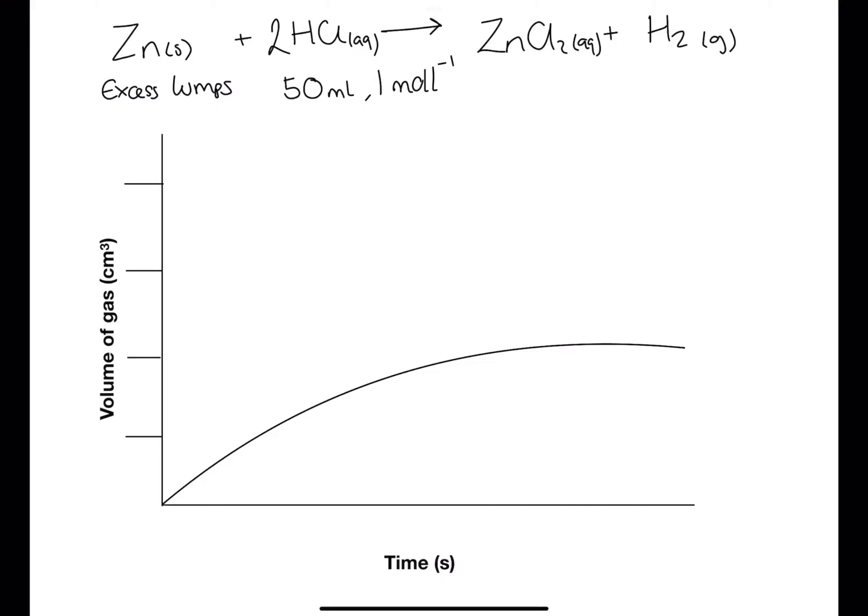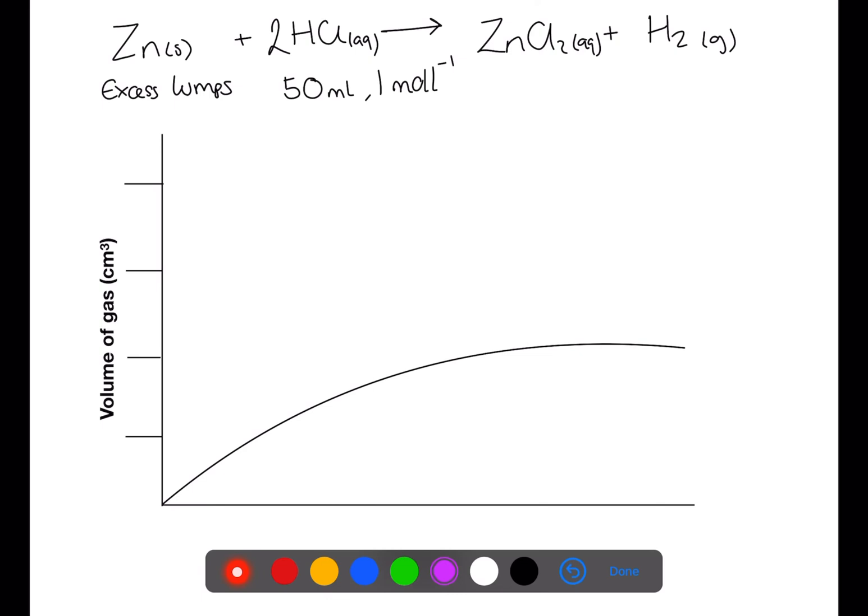Hi, welcome back to my channel. Today we're going to be looking at practice questions for the rates topic of higher chemistry. This graph here shows the volume of hydrogen gas which is produced in the reaction above using excess lumps of zinc with 50 mL of 1 molar hydrochloric acid.